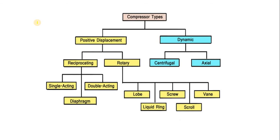This is the classification of the compressor. There is the positive displacement compressor and non-positive, that is dynamic compressor. Further, positive displacement compressors are two types: reciprocating and rotary. Similarly, dynamic compressors are two types: centrifugal and axial. Reciprocating are also of two types mainly: single acting and double acting. Rotary are again divided into four types: lobe, screw, ring type, scroll type, and vane type.